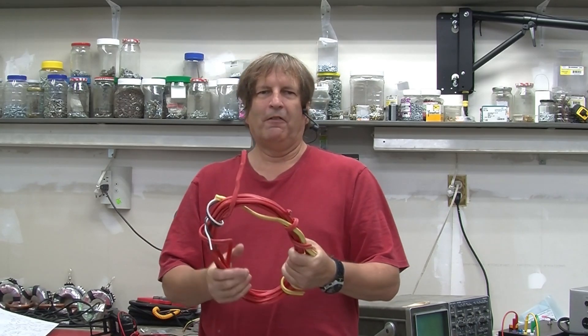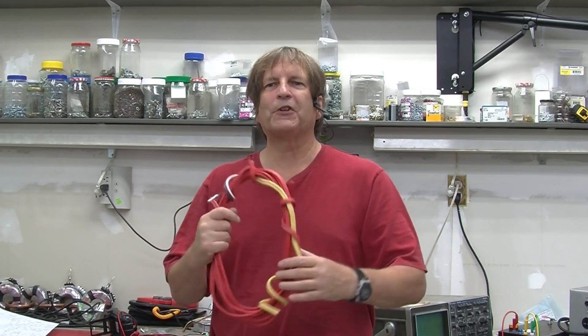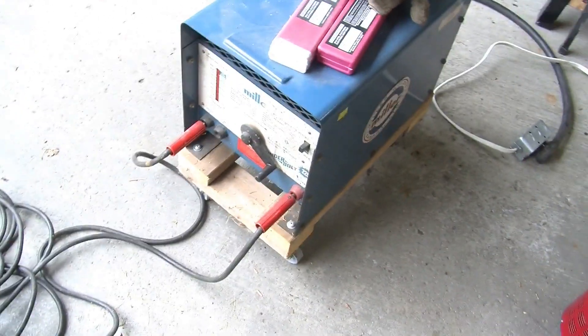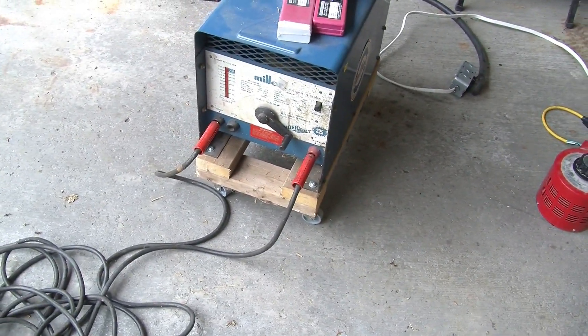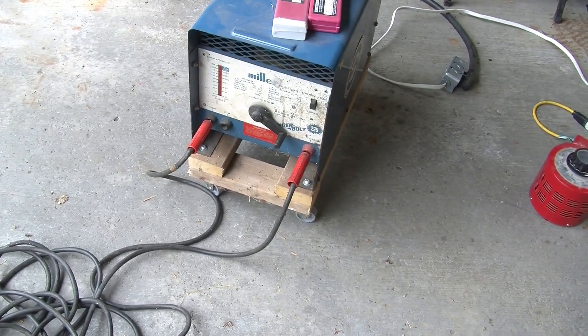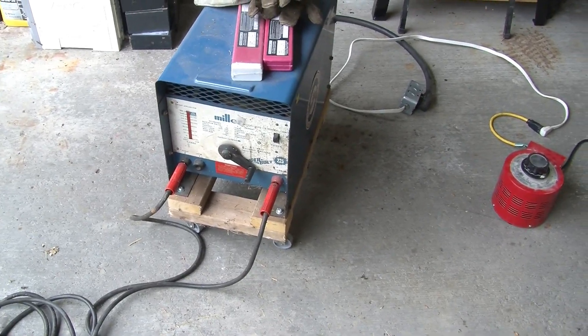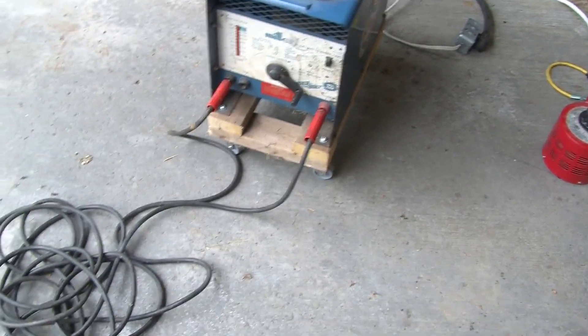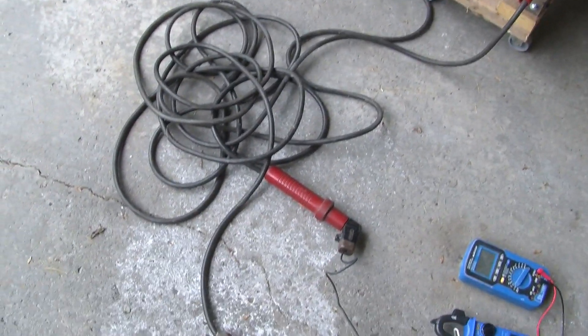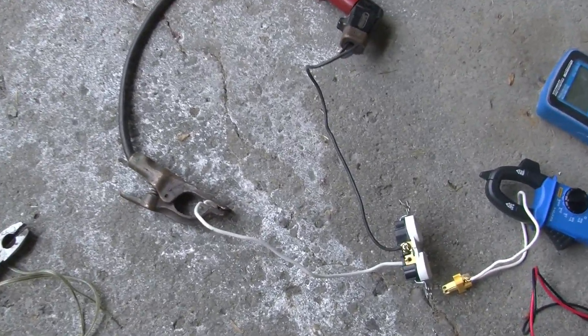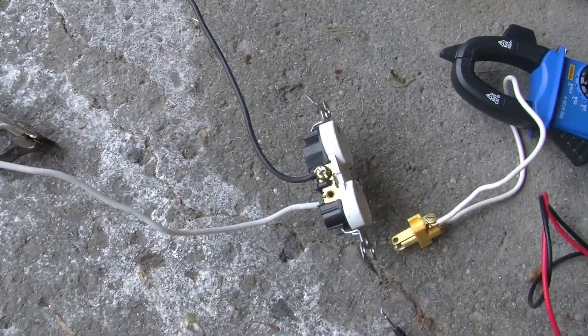The second question that was asked was, you're using a welder. Welders put out DC. Well, to start with, my welder is a vintage welder. In the old days, before we had nice high-power cheap silicon diodes, all welders pretty much spit out a nice AC current. And the reason they did that is it was cheaper. Probably if you had an industrial welder that was extremely expensive, you might be able to get something else. But the welder I'm using is AC.